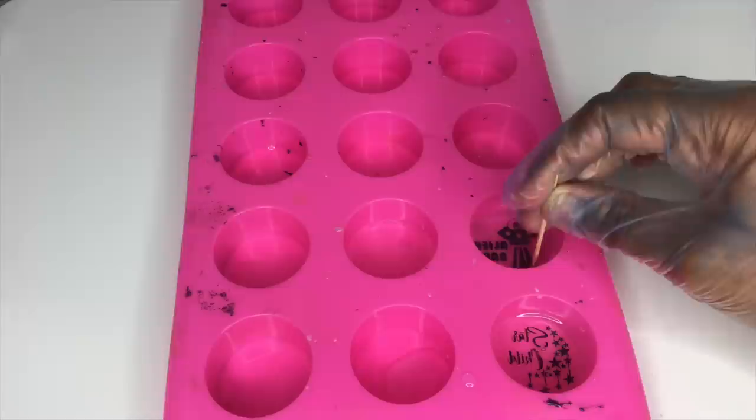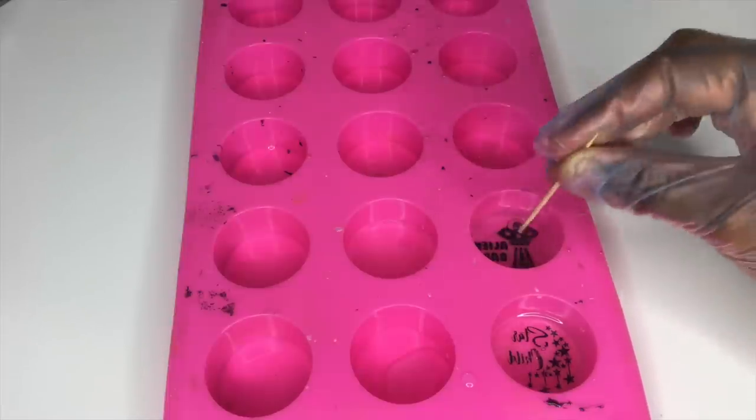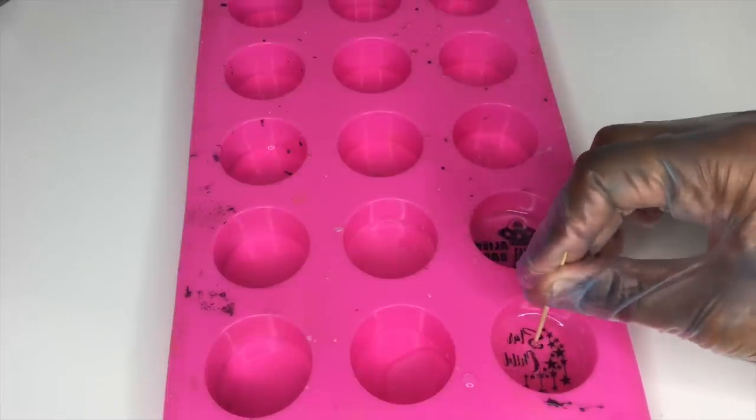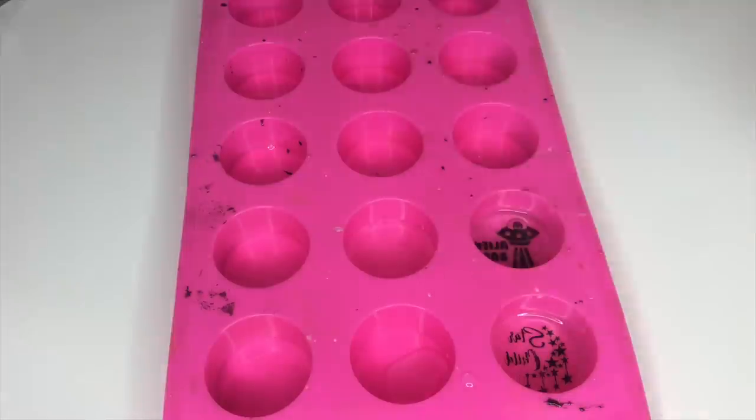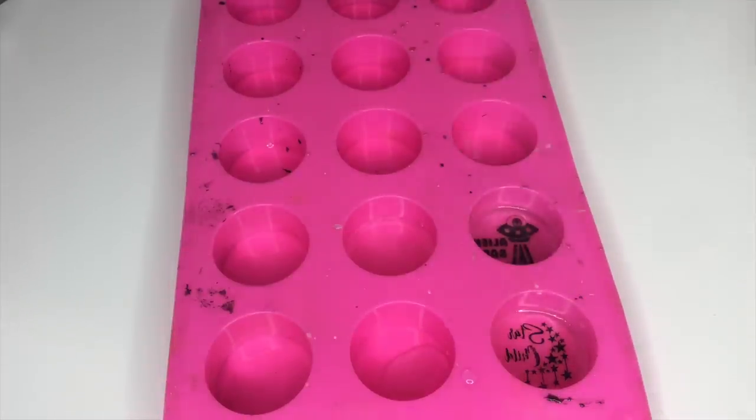Also, using toothpicks is really convenient because you're able to position the stickers where you want them to be. Just keep in mind when the resin is drying, they might shift around a bit. Now you just have to wait a few hours and you can pour the second layer over this.